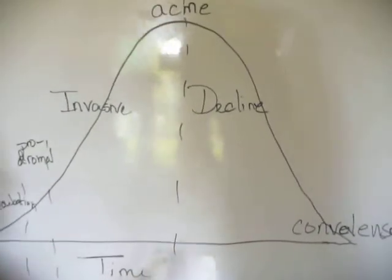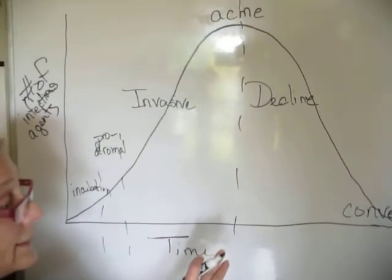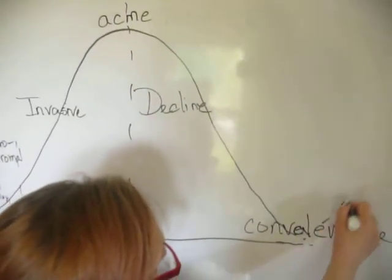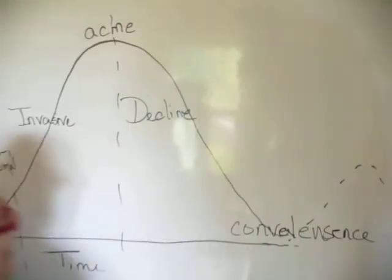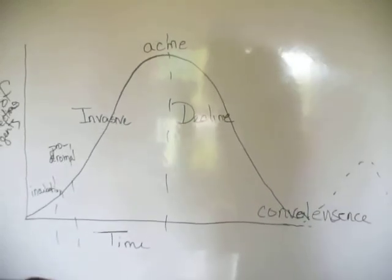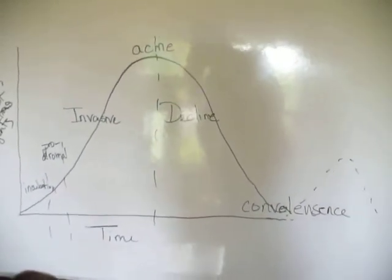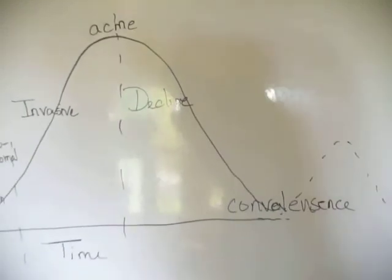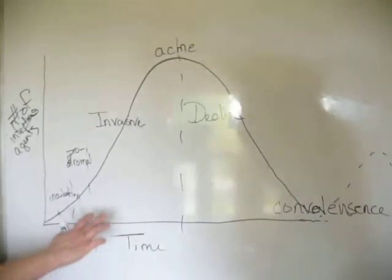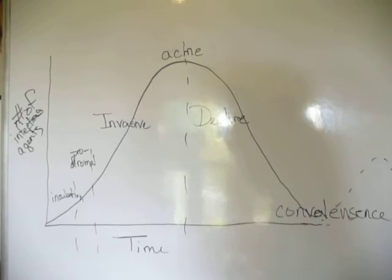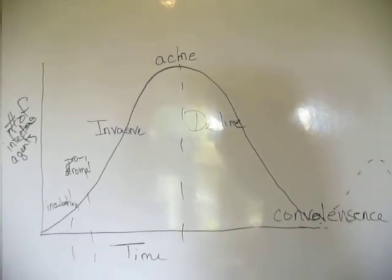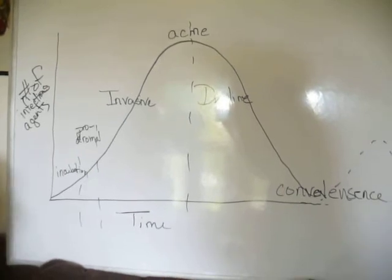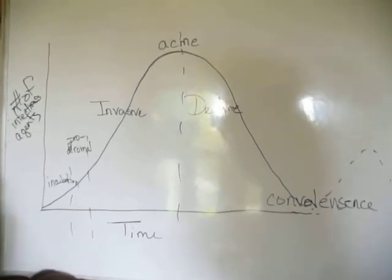Then there is convalescence — you can check the spelling on that. One thing I want to point out is that there are some diseases that are cyclic, so they will start over again — maybe as bad, maybe not as bad. Something like relapsing fever or malaria tends to do that, where you go through this whole set and then it starts over again.